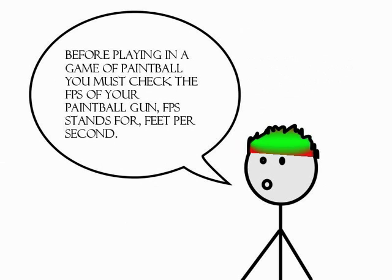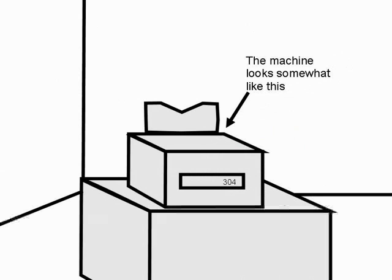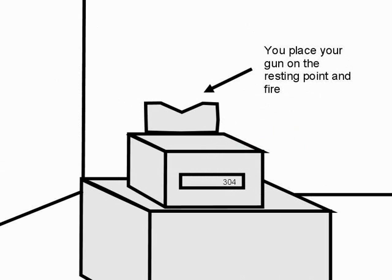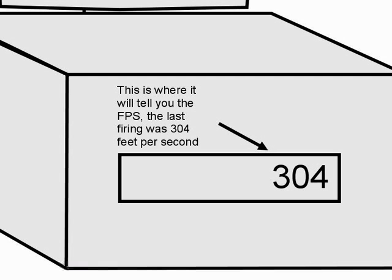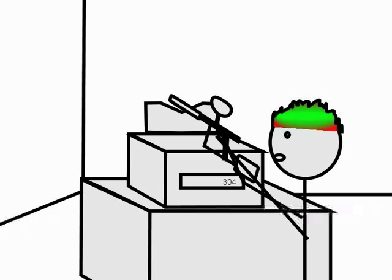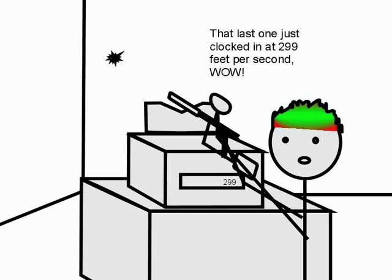Before playing in a game of paintball, you must check and see the FPS of your paintball gun. FPS stands for feet per second. The machine looks somewhat like this. When you place your gun on the resting point and fire, this will tell you the FPS. The last firing was 304 feet per second, and the last one clocks in at 299 feet per second.